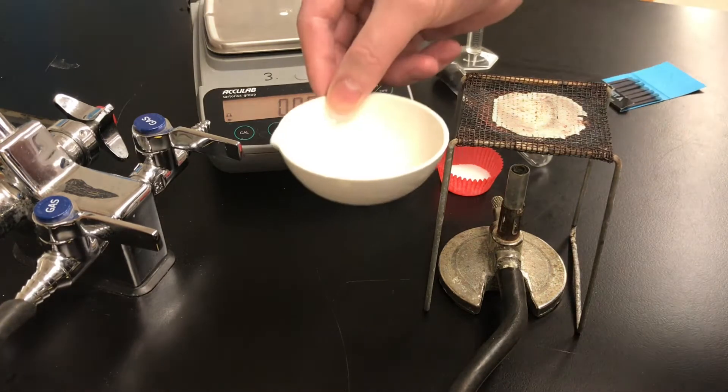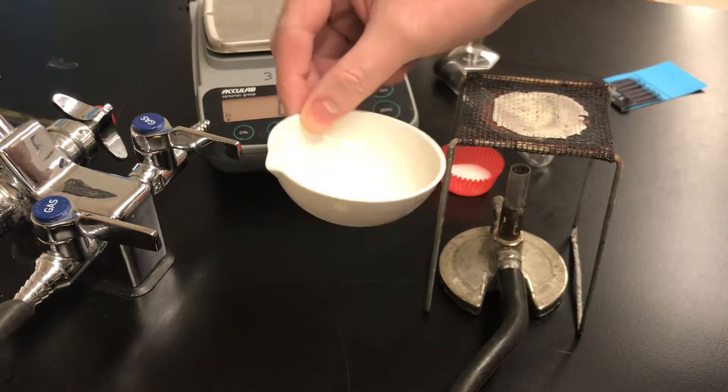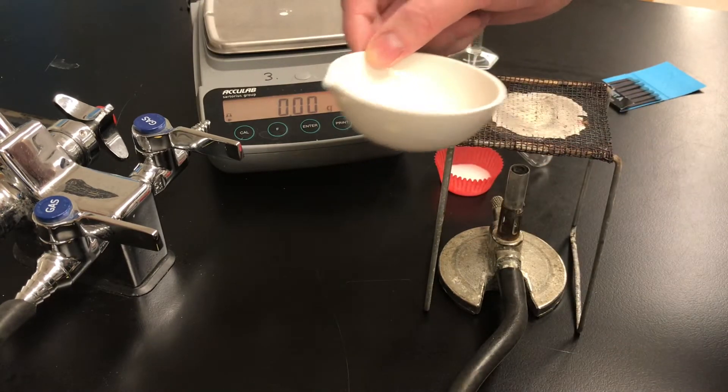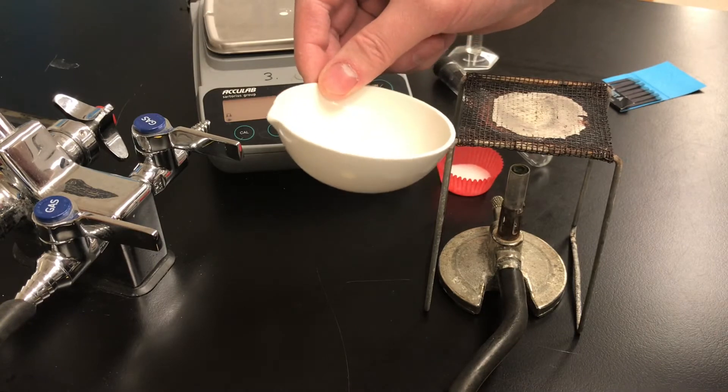We have an evaporating dish. An evaporating dish is just a white porcelain dish with a little bit of a lip on it. You heat it and just like the name sounds you evaporate liquids from it.